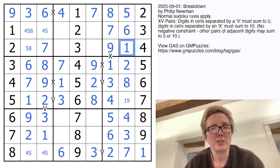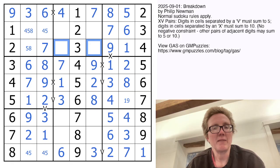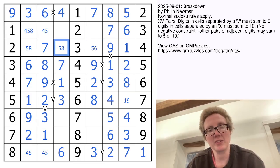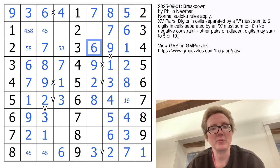I need 1 and 6 to finish off this region. And here I'm going to need 5, 6, and 8. I can't have an 8 there. I can't have a 6 here. So I have a 5, 8 pair, which places a 6 right there.